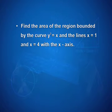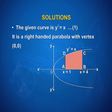The first question was: find the area of the region bounded by the curve y² = x and the lines x = 1 and x = 4 with the x-axis. The given curve is y² = x, which is a right-handed parabola with vertex at the origin (0, 0).